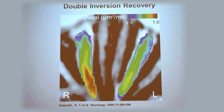This is an image of the optic nerves using double inversion recovery technology. You can see here a plaque in the optic nerve on the right — and remember, in radiology things are reversed, so the right is left and left is right. This is the sort of thing you can pick up which you can't pick up in standard sequences.